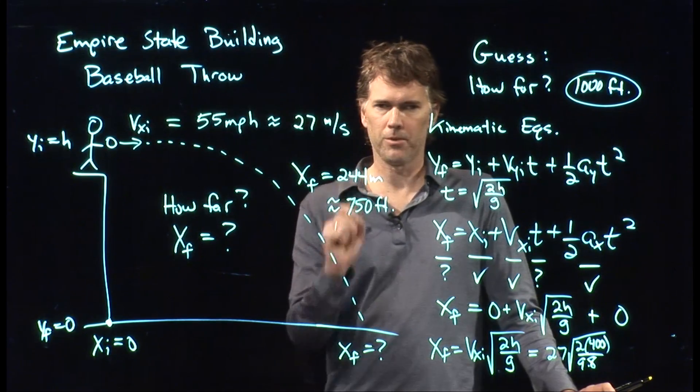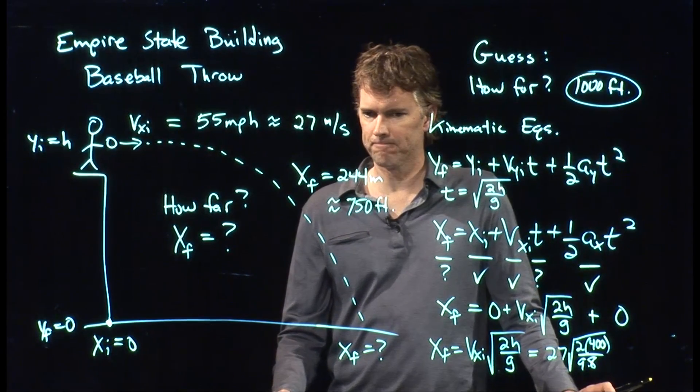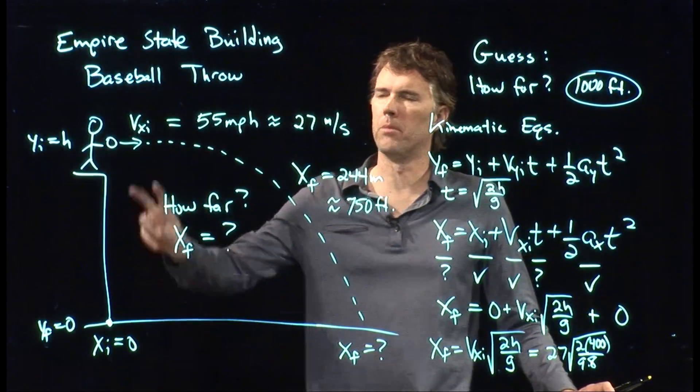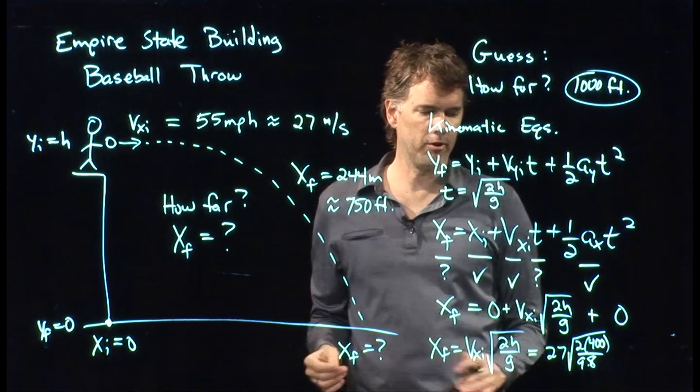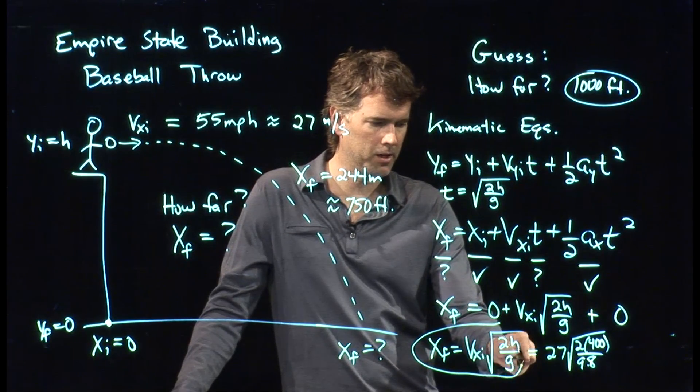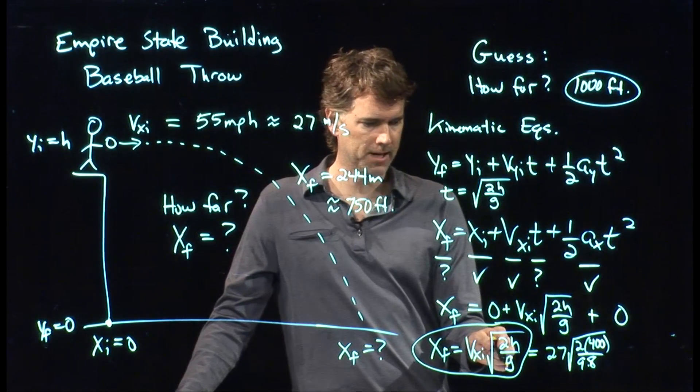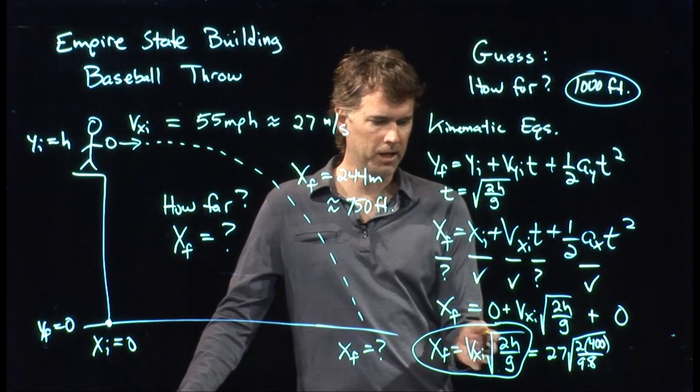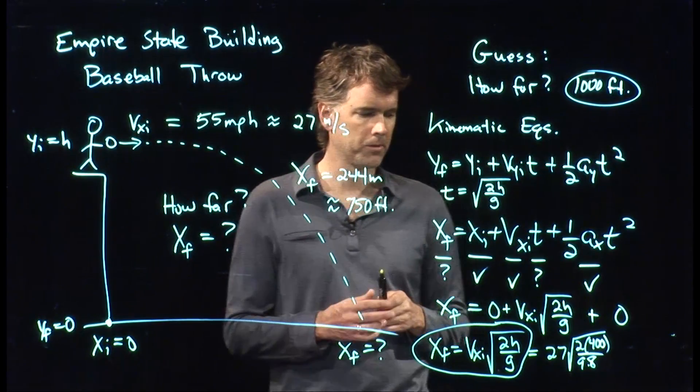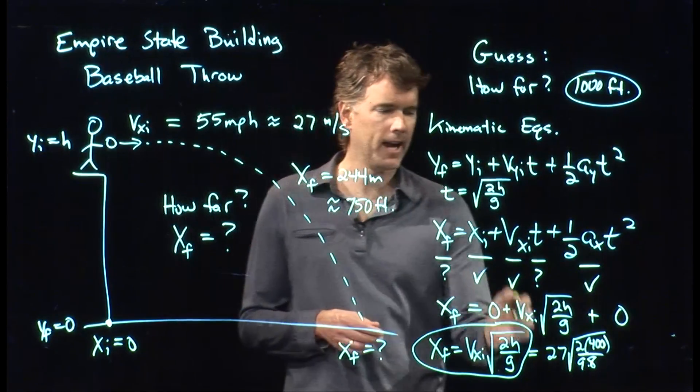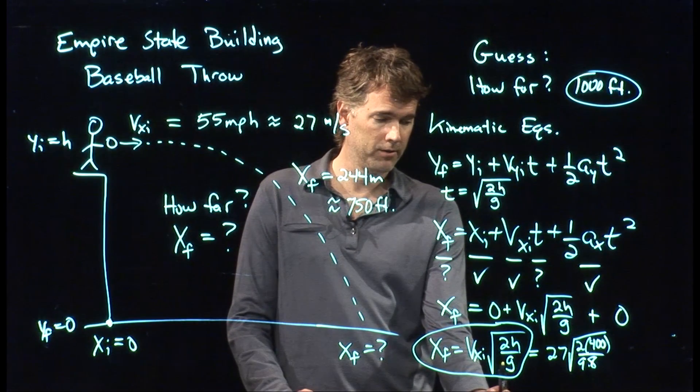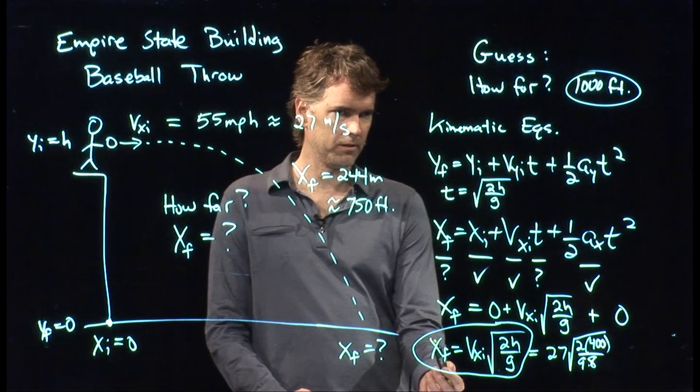Obviously, if you throw it faster or if the building's higher, then it's going to end up going further. And you can see that right here in this final equation. And this is one of the reasons that I want you to calculate all these things with variables the whole time. To make sure, at the end, it makes sense. If I increase my speed, xf goes up. That's what that equation tells me. If I increase the height, I increase the distance. If gravity is suddenly stronger, then I would decrease the distance.